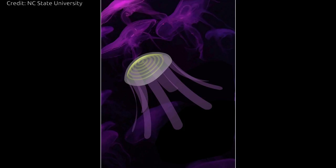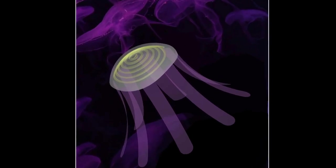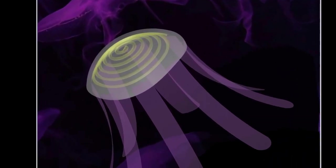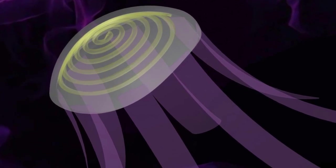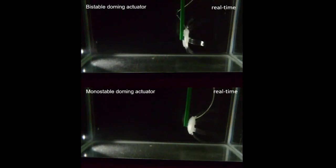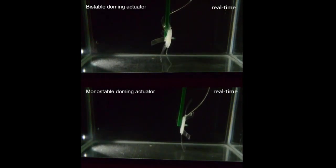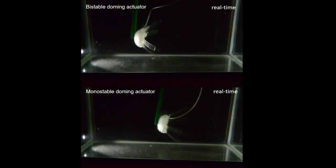Engineering researchers at North Carolina State University and Temple University have developed soft robots inspired by jellyfish that can outswim their real-life counterparts. More practically, the new jellyfish bot highlights a technique that uses pre-stressed polymers to make soft robots more powerful.